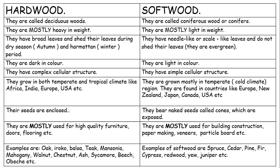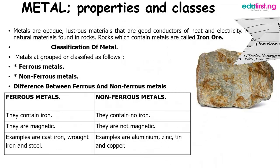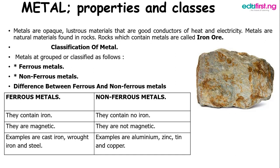Now moving to metals. Metals are opaque, lustrous materials that are good conductors of heat and electricity. Metal occurs naturally in rocks, and these rocks that contain metals are called iron ore. You can see an example of an iron ore in this slide.